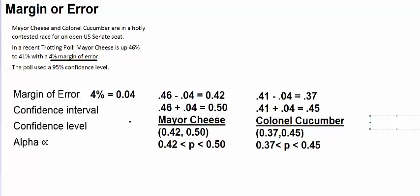The poll said that Mayor Cheese was up 46% to 41%. But what's within reason, what's possible, is that Mayor Cheese could be performing as poorly as 42%, and Colonel Cucumber could be performing as well as 45% with the electric. So if that's the case, Colonel Cucumber could actually be in the lead. So you would consider this a statistical tie, because their confidence intervals overlap. So the poll would suggest that Mayor Cheese has the lead, but when you take into account the margin of error, it's still very reasonable for the opinion of the population for Colonel Cucumber to be in the lead, or for this race to be tied. So you would think of this as being a statistical tie.